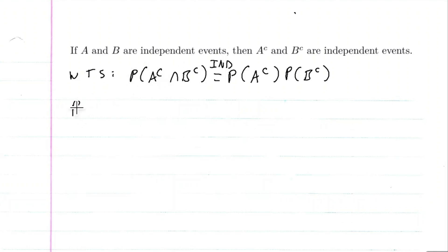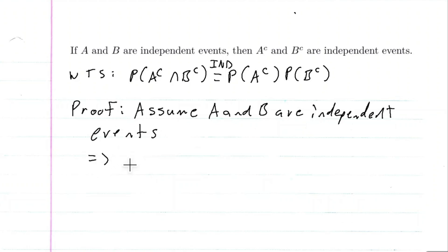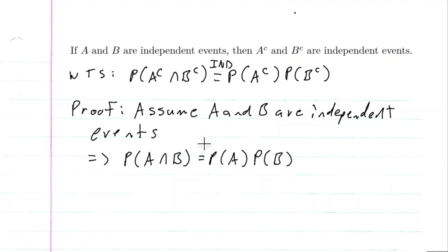So let's go ahead and start the proof. We assume A and B are independent. This implies that the probability of A intersection B is equal to the probability of A times the probability of B — that's what it means for two events to be independent.